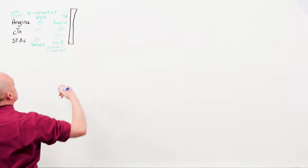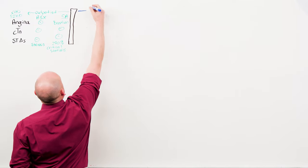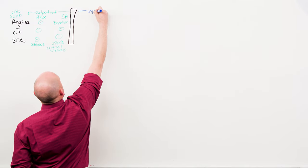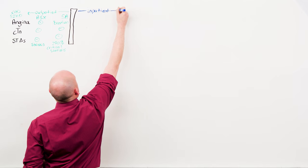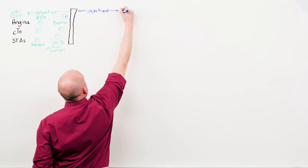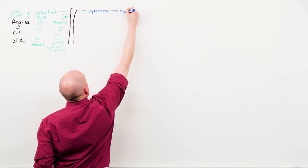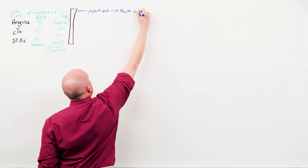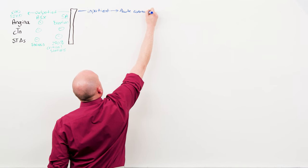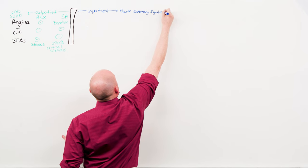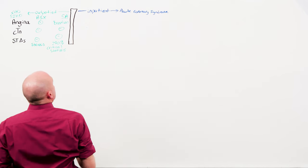On the other side of this wall are all the things that are going to be seen inpatient, from an acute event, rupture and thrombosis, and so are dealt with acutely. Acute coronary syndrome, myocardial infarction.